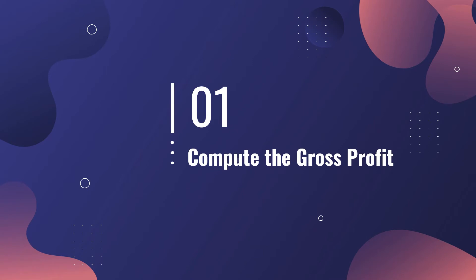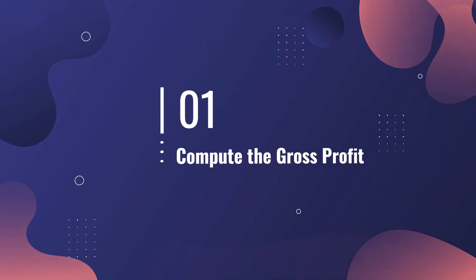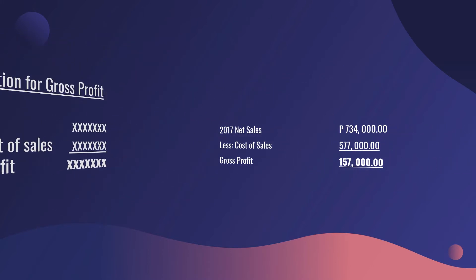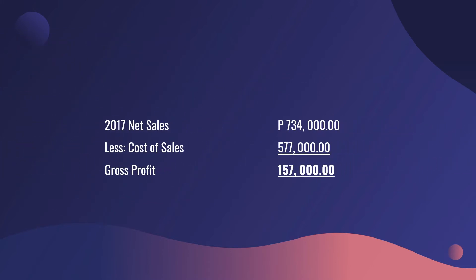Now let's compute the gross profit. Remember that profitability ratios are a group of financial metrics that primarily determine the profitability of the business. The pro forma for gross profit is: Net Sales less Cost of Sales equals Gross Profit. Using this formula, XYZ Trading in the year 2017 had net sales of 734,000 less cost of sales of 577,000, giving a gross profit of 157,000.